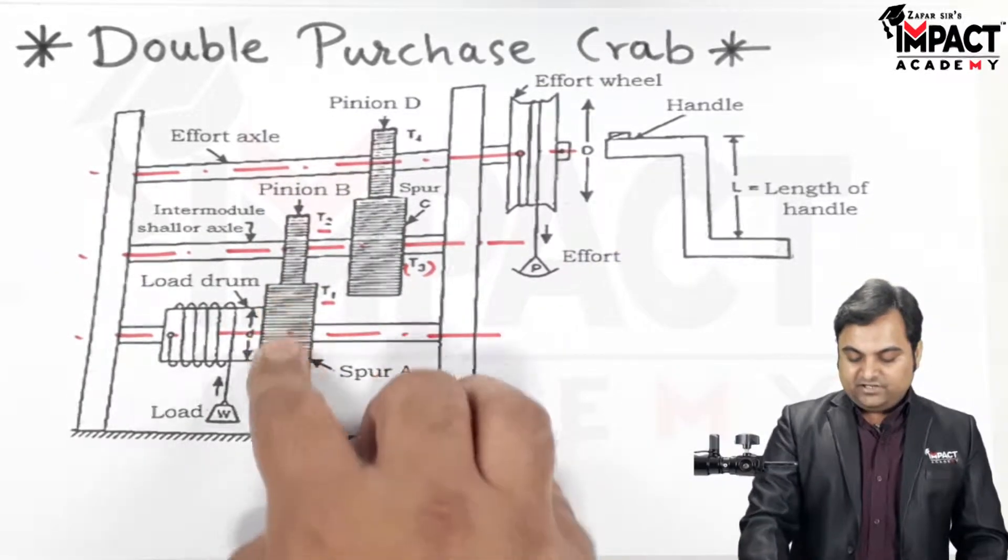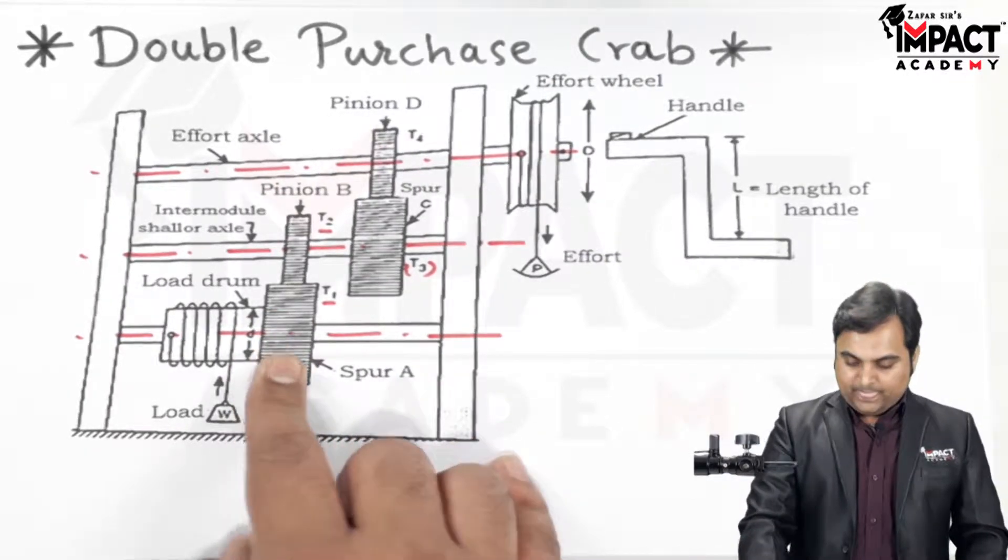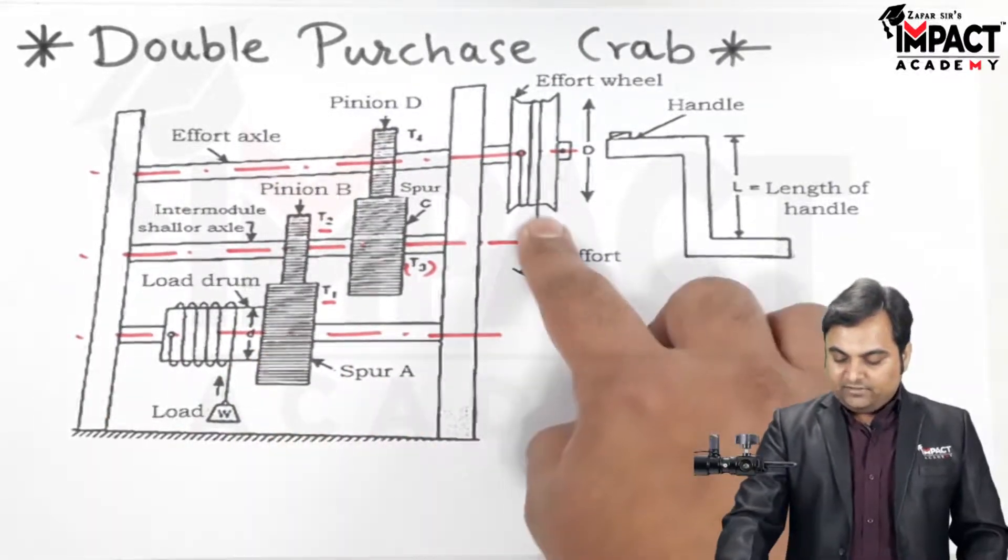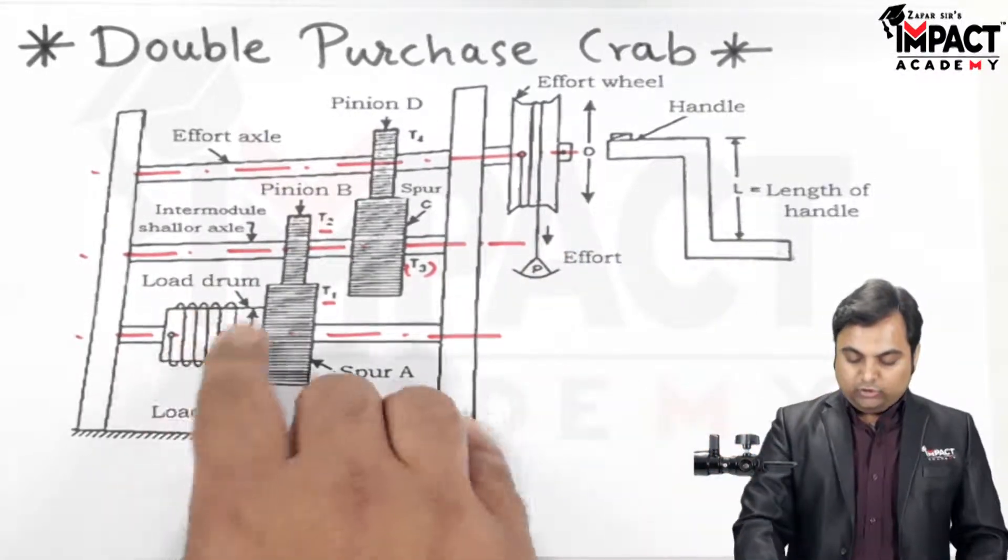Once B rotates anti-clockwise, it transfers the motion to t1 and spur A would be rotating in a clockwise direction. So this is the functioning. The moment we apply the effort at this end at the effort wheel, the load winds on the load drum and gets lifted.